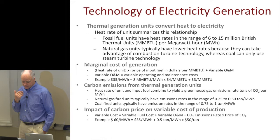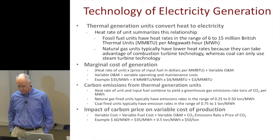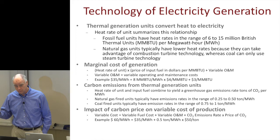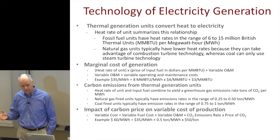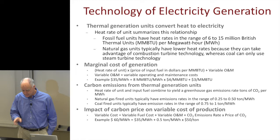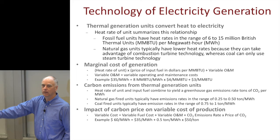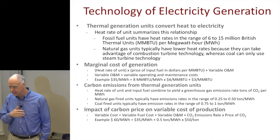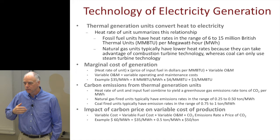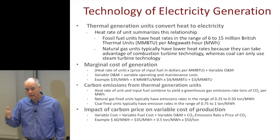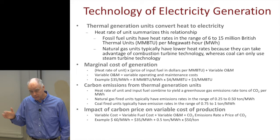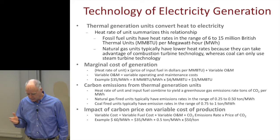The way to think about a thermal generator is you take some input fuel, convert the heat into electricity — either through a combustion turbine or by combusting fuel to heat a boiler, producing steam that turns the turbine. We typically summarize this for generation units using what's called a heat rate, which tells you how many units of heat you need to put in to get one megawatt hour of energy out. The heat rate can vary, much like miles per gallon in a car, but for this game we use a single average heat rate.